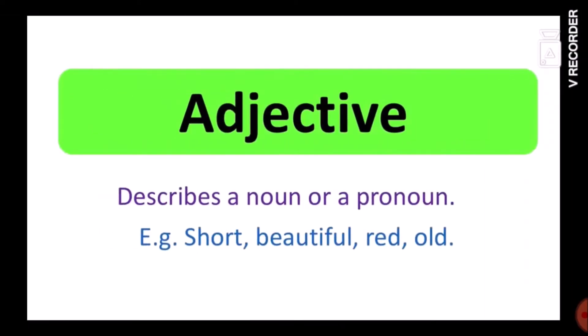The next topic is adjective. Adjectives describe a noun or a pronoun. They give more information about a noun or a pronoun. For example: short, beautiful, red, old. These are examples of adjectives.